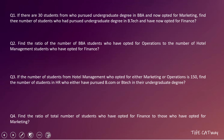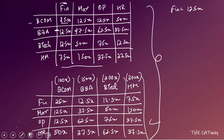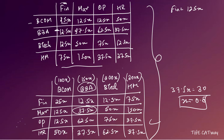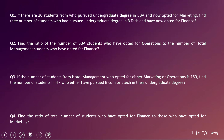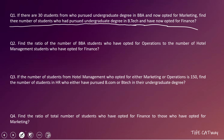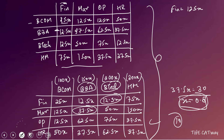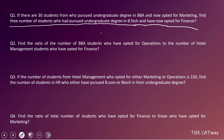Question 1: If 30 students from BBA opted for Marketing, then 37.5x = 30, so x = 0.8. The number of BTech students who opted for Finance = 12.5x = 12.5 × 0.8 = 10. The correct answer for Question 1 is 10.